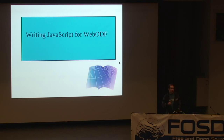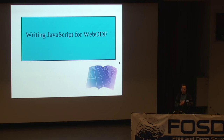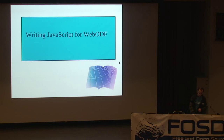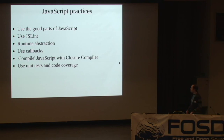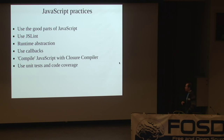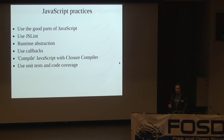The next part is a bit about JavaScript. Because writing JavaScript is something many people like to do but few people like to learn — and the problem with JavaScript is it's quite flawed, there are many problems with it, but you can avoid the problems. You have to be very careful when writing JavaScript, but with the right tools, it's fine. Here's a list of practices: use the good parts of JavaScript and avoid the many bad parts; use JSLint which checks if your JavaScript is good; use runtime abstraction — we really need that here because WebODF might be running in a browser, on a command line, or in a native application; use callbacks for fast IO; compile your JavaScript using the Closure compiler; and use a lot of unit tests.